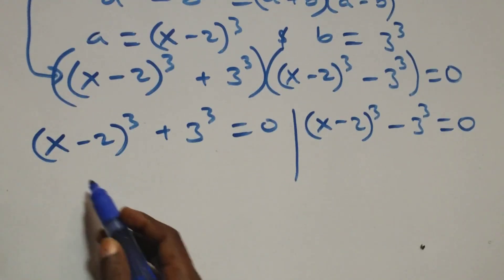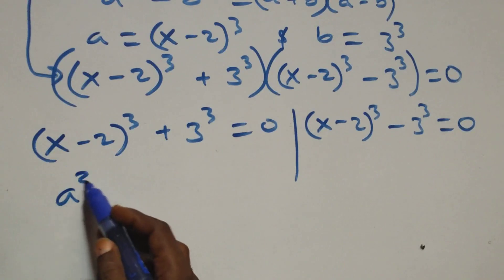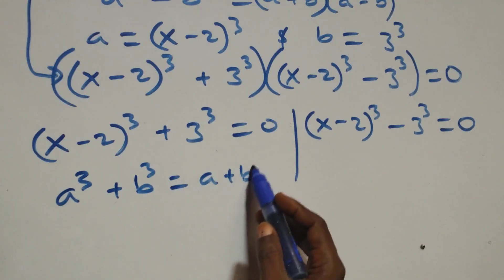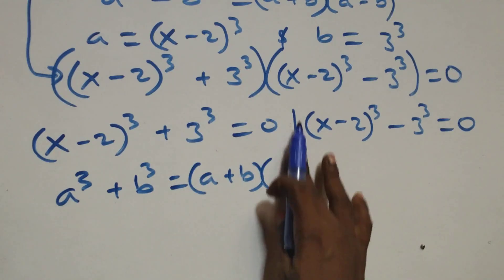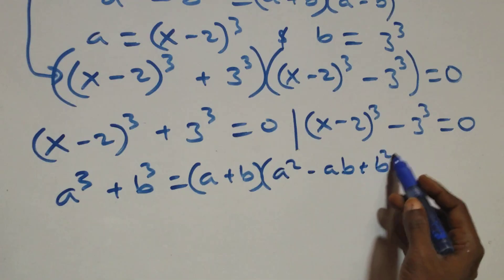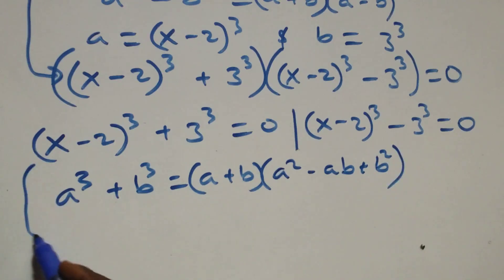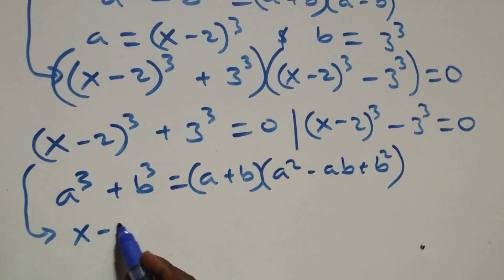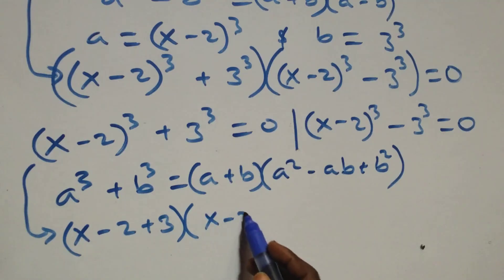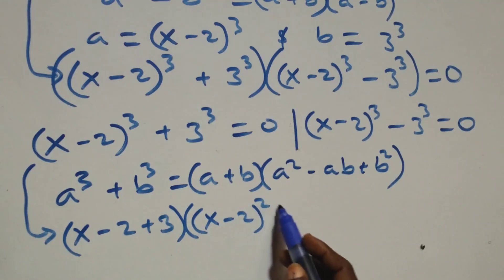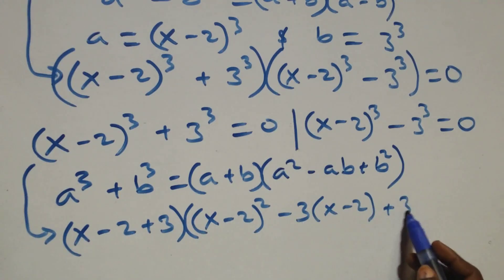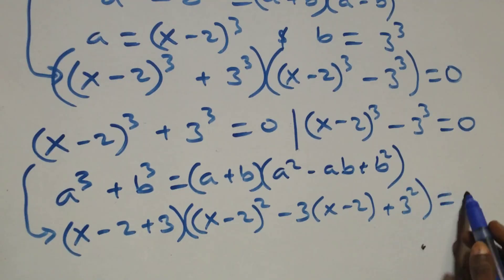Solving this side: we use the identity a³ + b³ = (a + b)(a² - ab + b²). This becomes (x minus 2 plus 3) times (a² minus 3 times (x minus 2) plus 3² ) equals 0.